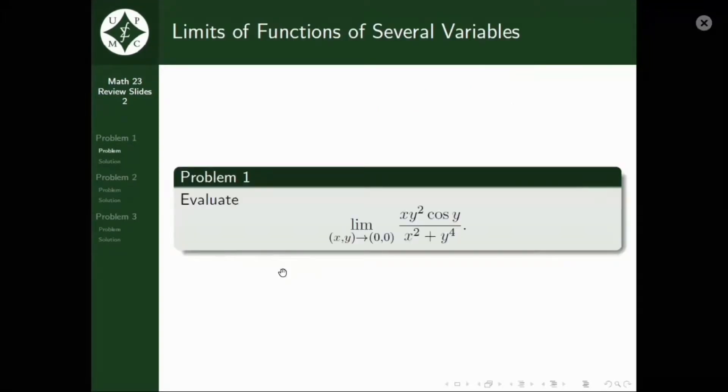So, for the first problem, we are asked to evaluate the limit of XY squared cosine Y all over X squared plus Y to the fourth as the ordered pair XY approaches the origin. So, kung kayong tatunungin, let's inspect the denominator. Yung 4 is a multiple of 2.